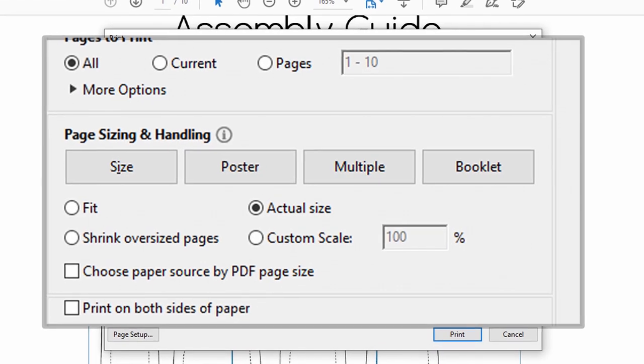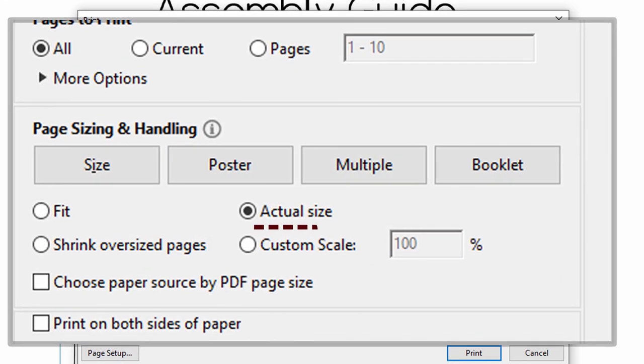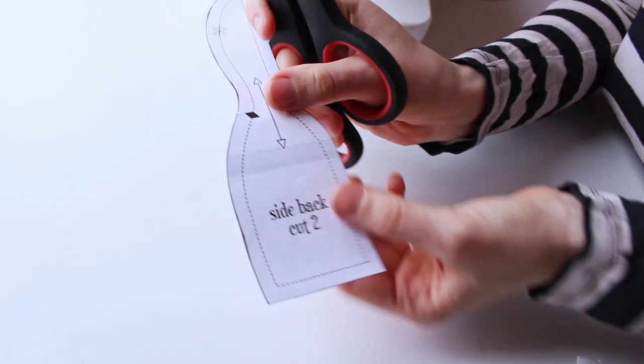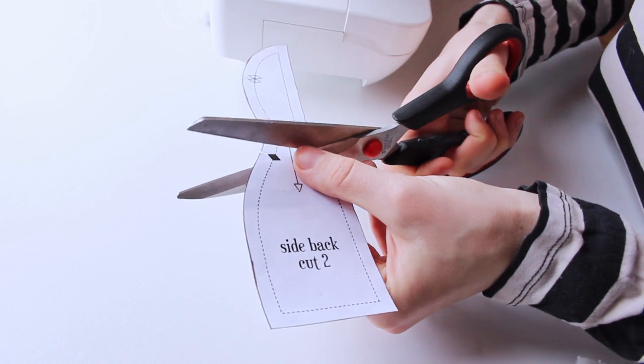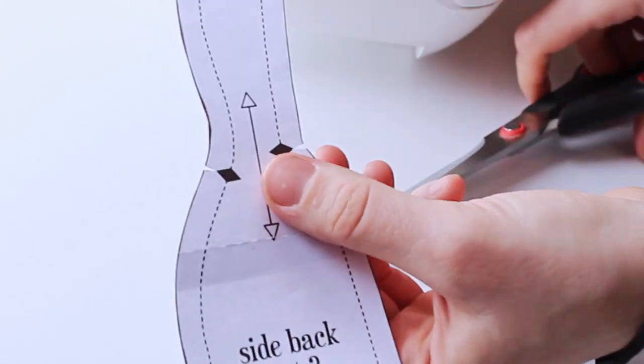Make sure that the PDF is set to print at actual size. Assemble pages using the instructions and cut pattern pieces out. And don't forget to cut out the triangular notches.